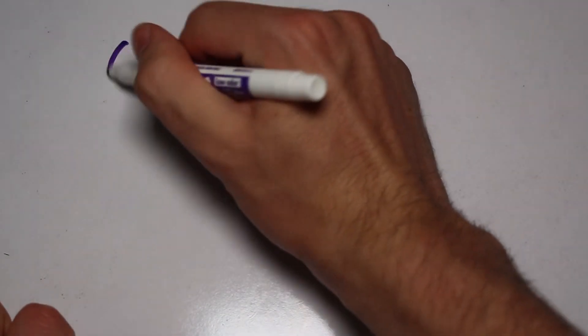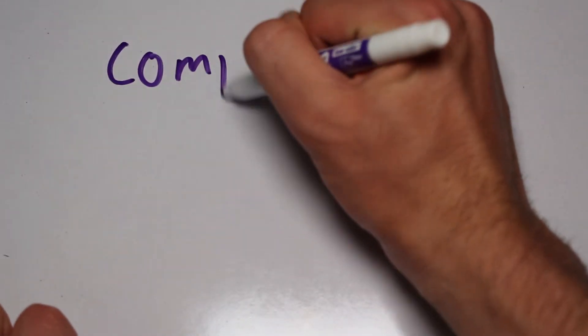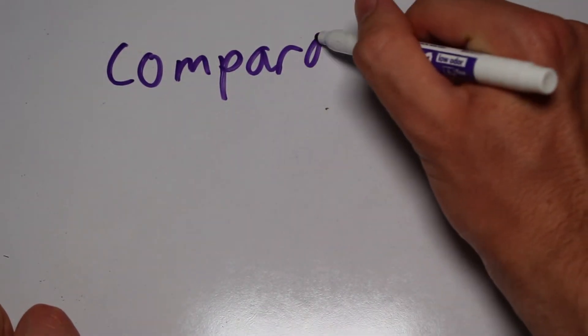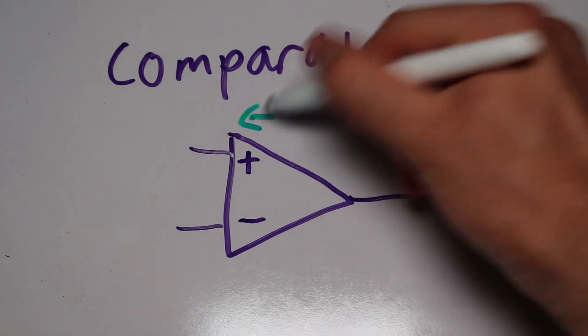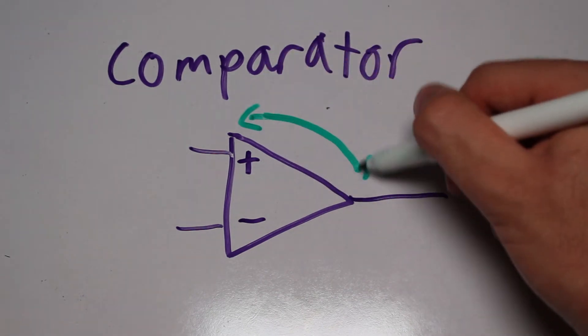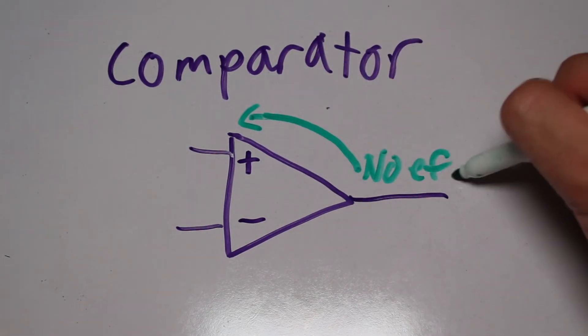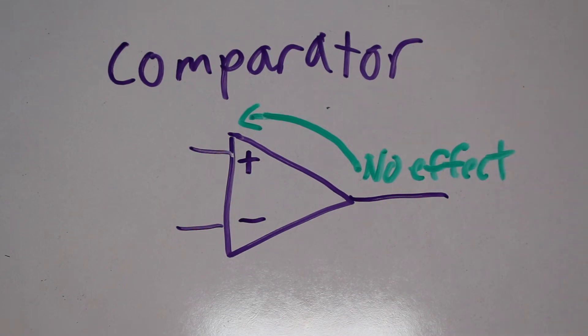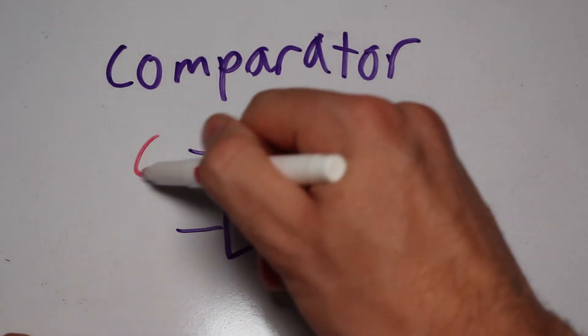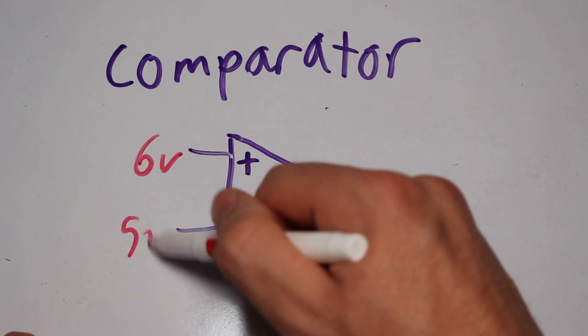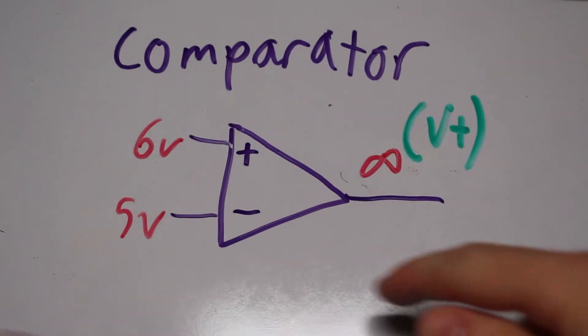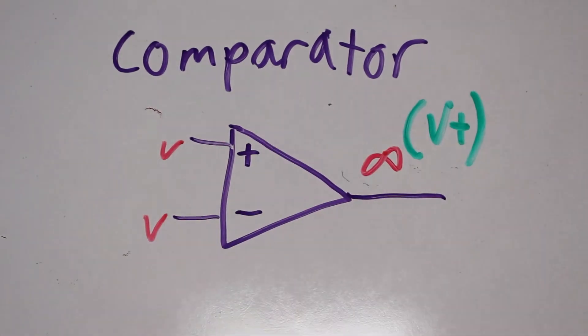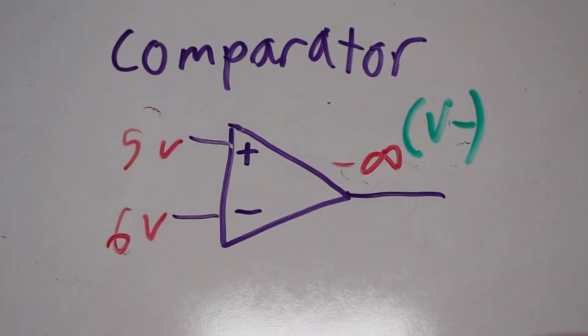Let's start with the classic comparator. The comparator is wired up in a configuration with no feedback from the output, meaning that no matter how the op-amp drives the output, it cannot affect the inputs. This means that it will go as high or as low as it possibly can depending on the input that has the higher voltage. If the non-inverting input is higher, then the op-amp will drive it as close to the positive supply as possible. And if the inverting input is higher, then the op-amp will drive the output as close to the negative supply as possible.